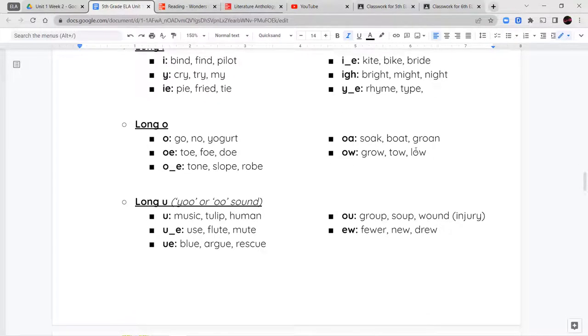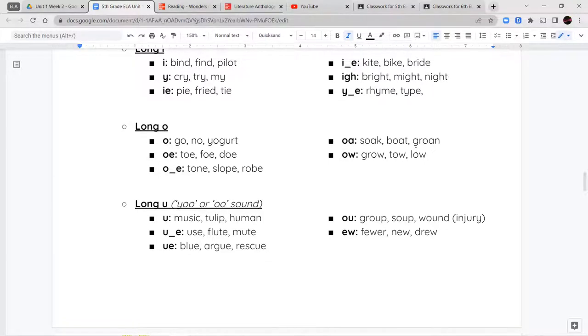Now the long U can make two different sounds. It can have the U sound or the oo sound. The long U like music has the U, or tulip has the oo, or human. We have U consonant letter E like use, or flute, or mute. U-E like blue, argue, or rescue. O-U like group, soup, or wound. Not wound. W-O-U-N-D can have two pronunciations. A wound like a place where you got hurt. Or E-W like fewer, knew, or drew. So those are our long vowel sounds.